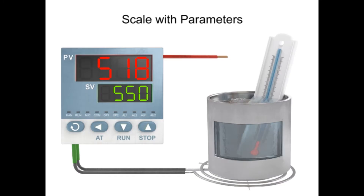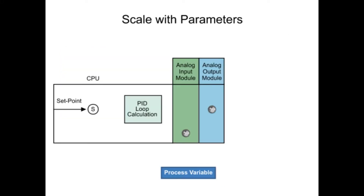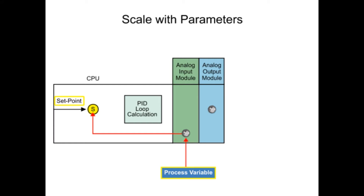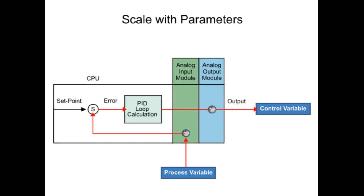PID control is a common closed-loop system used to maintain physical properties such as pressure and temperature in automated processes. The PID instruction controls the closed-loop by comparing the input or process variable from an analog input module to the system set point. The difference between the set point and the process variable is referred to as error. The error is analyzed by the PID loop calculation and provides an output or control variable to an analog output module to meet the set point defined by the system requirements.